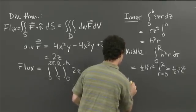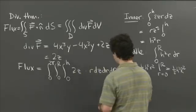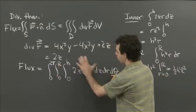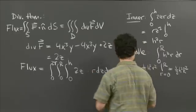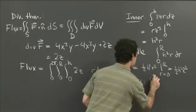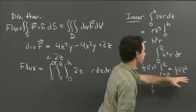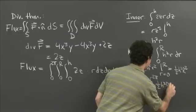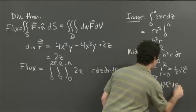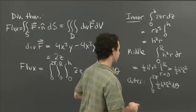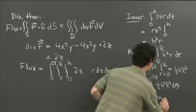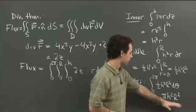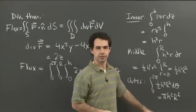For the outer integral, we integrate one half h squared R squared — which is constant with respect to theta — from 0 to 2π. Multiplying by 2π gives pi h squared R squared. So our final answer is pi h squared R squared.